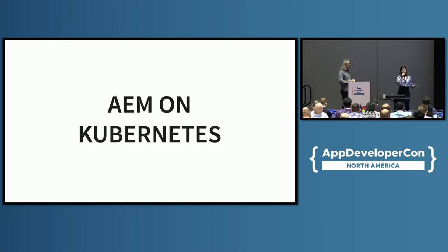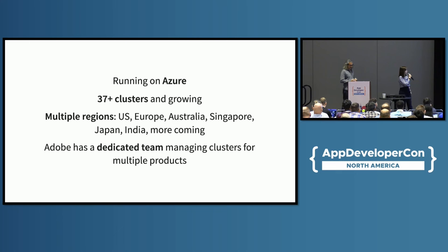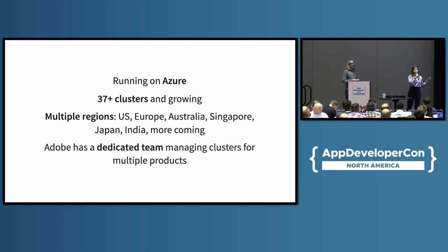This product, AEM, is running on Kubernetes. We have a quite big product — we are running on Azure and have 37 or more clusters in production. We are present in multiple regions: the States, Europe, Australia, Singapore, Japan, India, and more availability zones are coming. We have a dedicated team building and managing the infrastructure for us, which is important because then we don't need to care about the low-level stuff — we just use Kubernetes.